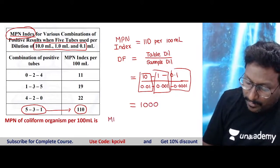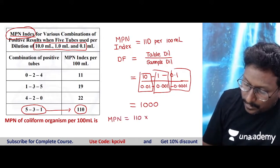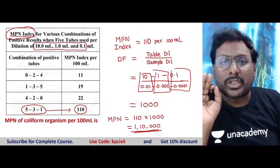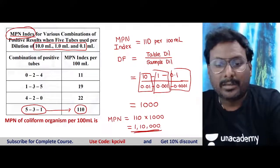Now you take the MPN value. MPN is equal to MPN index value times dilution factor. You will get the answer 1,10,000. This is the solution for GATE 2021 two marks. This is the shortest method to solve MPN value.